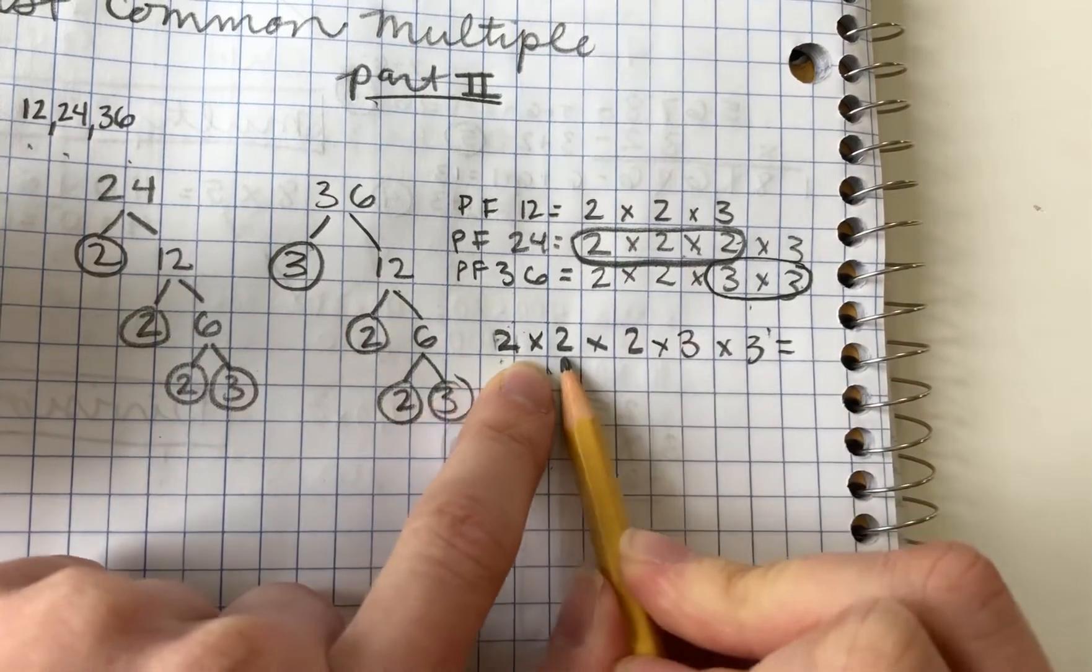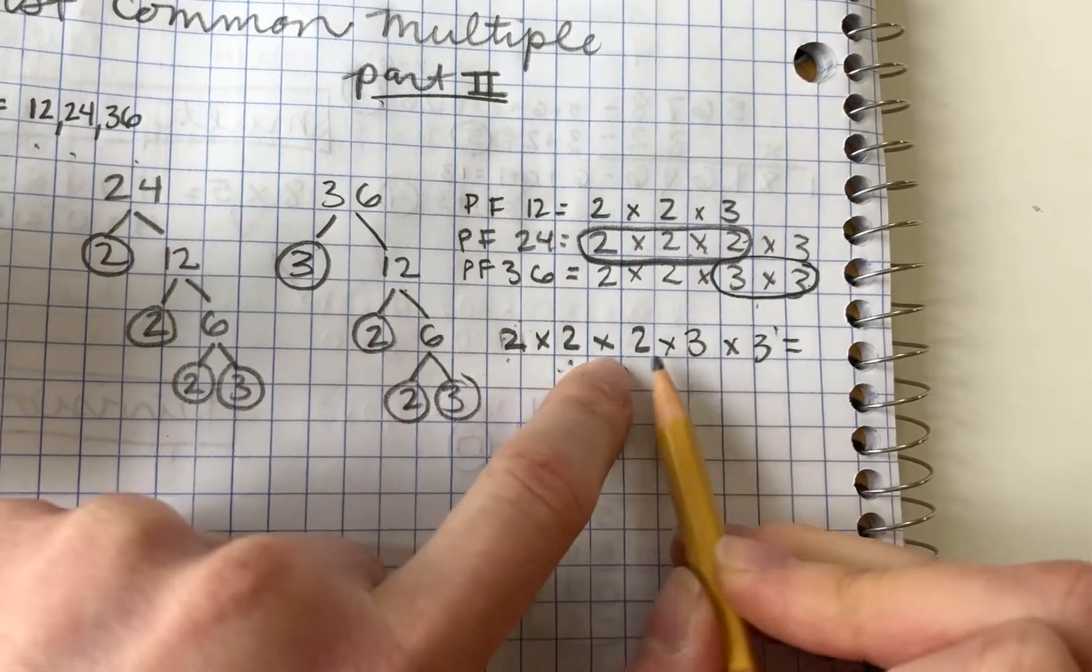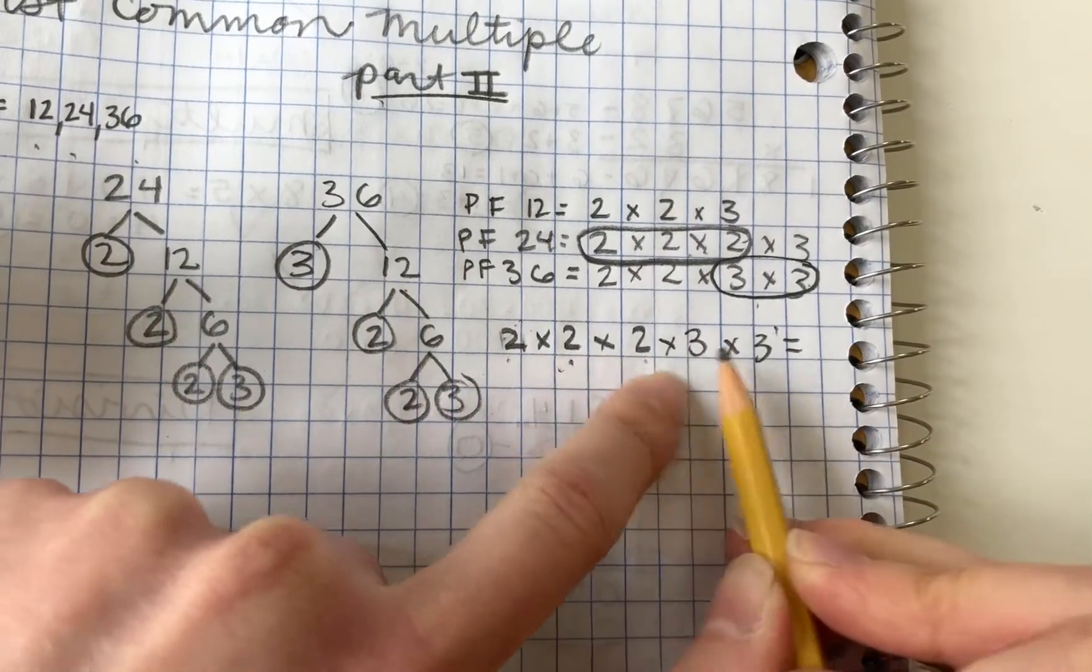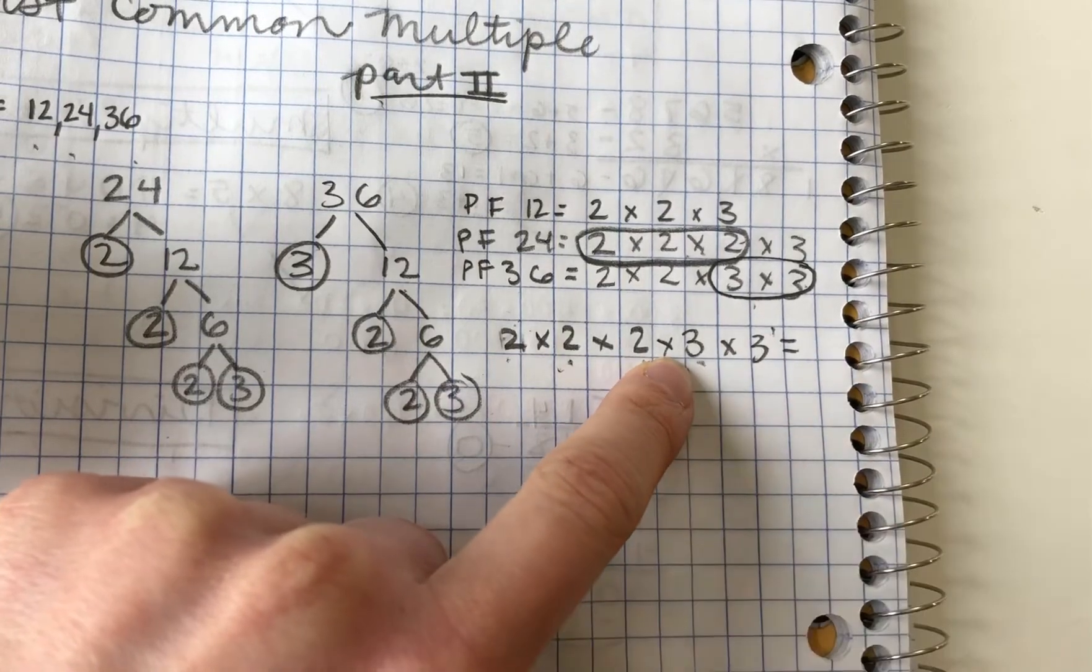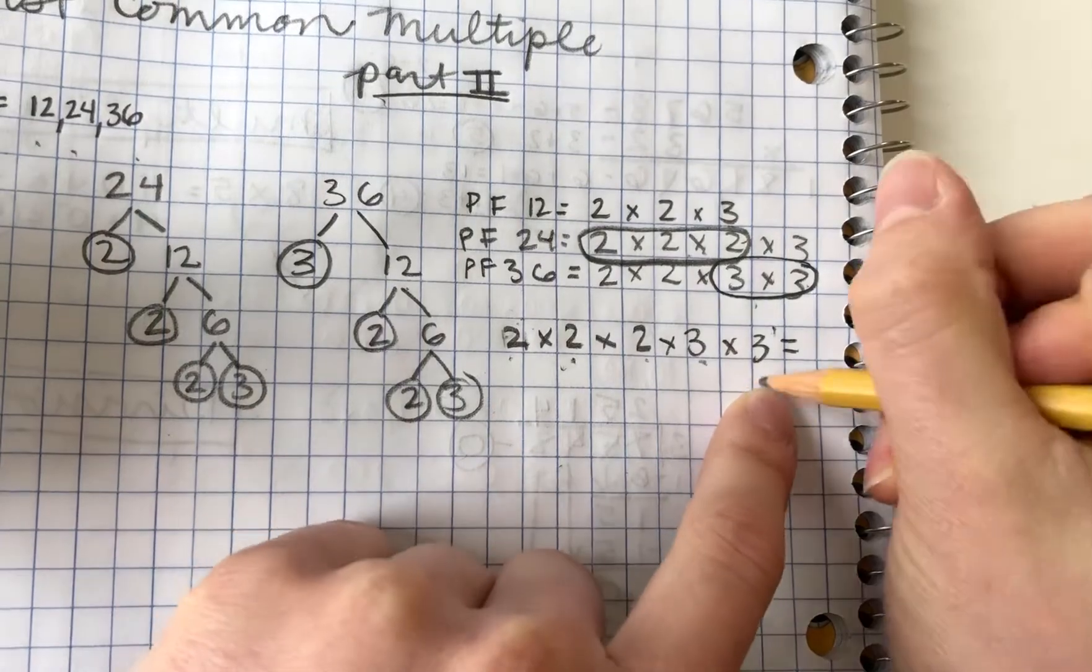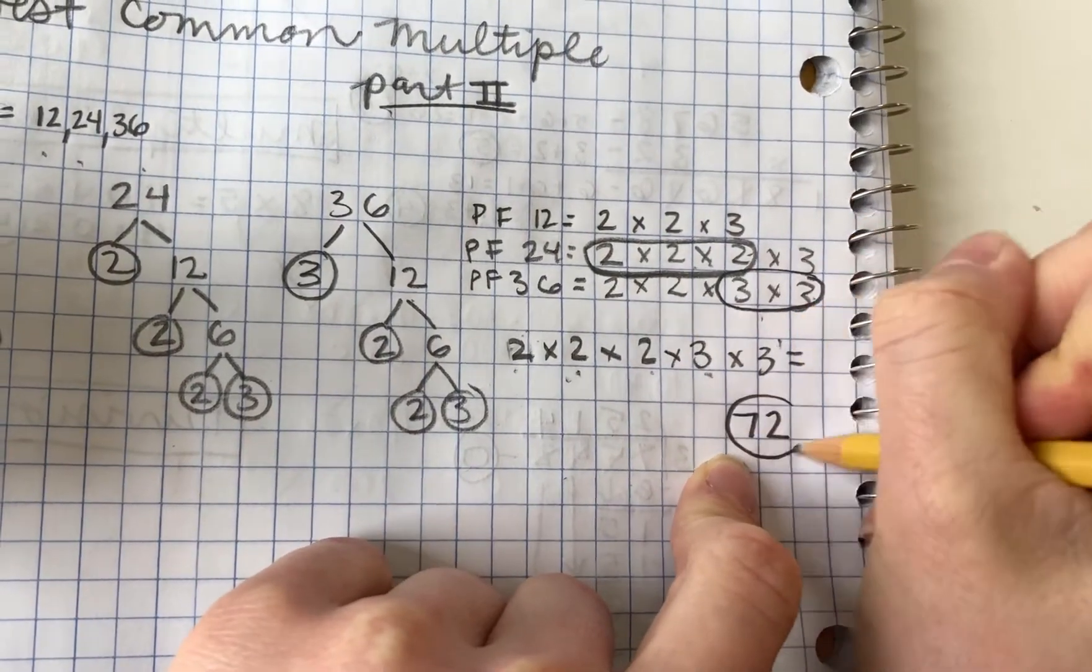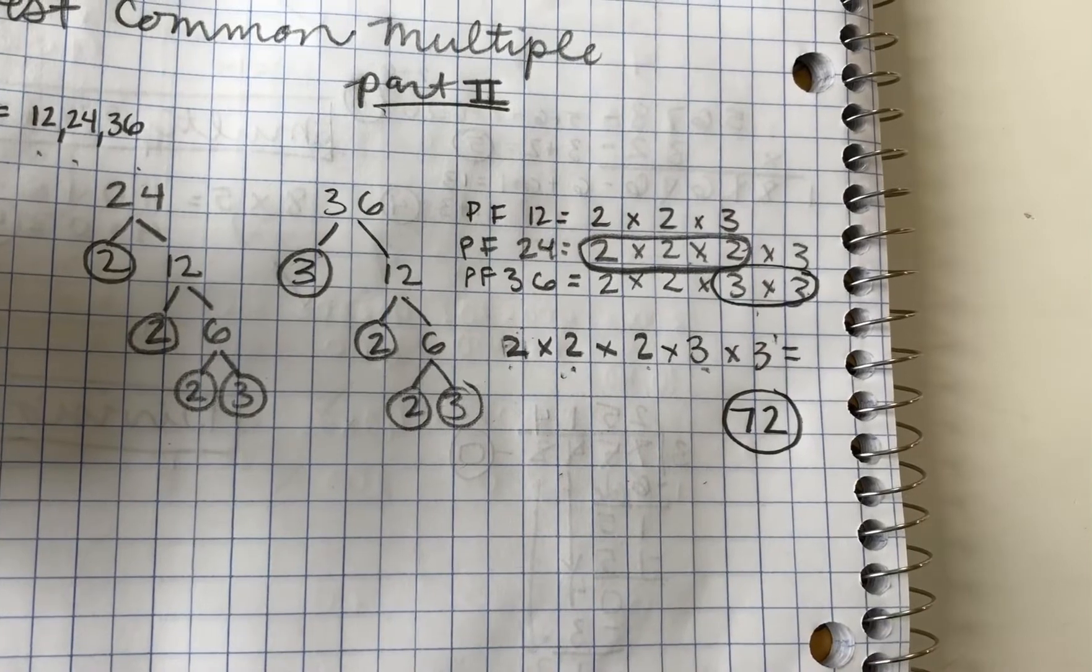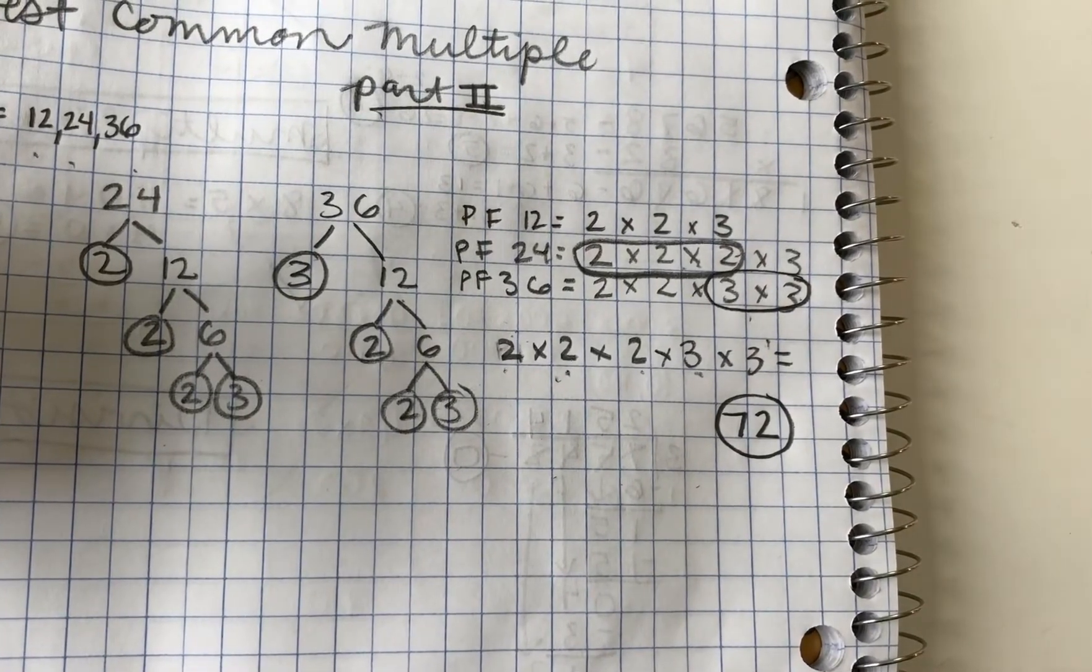So 2 times 2 is 4, times 2 is 8, times 3 is 24, and 24 times 3 is 72. So 72 is the lowest common multiple.